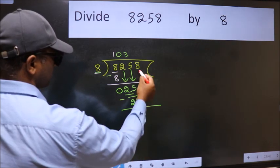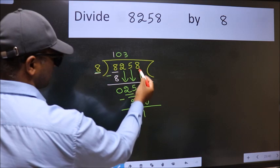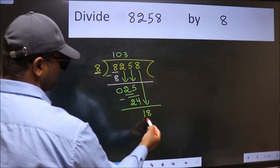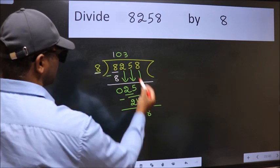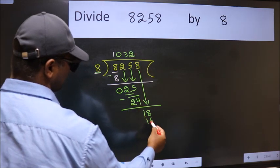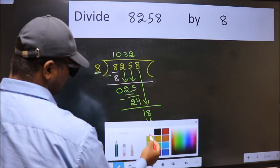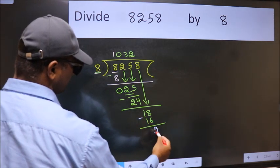After this bring down the beside number. So 8 down. 18. A number close to 18 in 8 table is 8 twos 16. Now we subtract. We get 2.